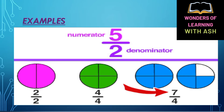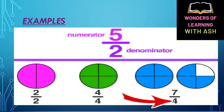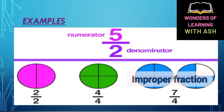The total shaded parts are counted as the numerator. It is 7 parts that are shaded. The 4 parts are in the denominator. So the numerator 7 is greater than the denominator 4, and this is an improper fraction — 7 by 4.